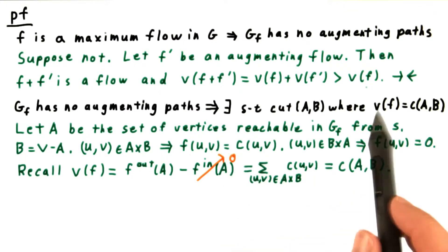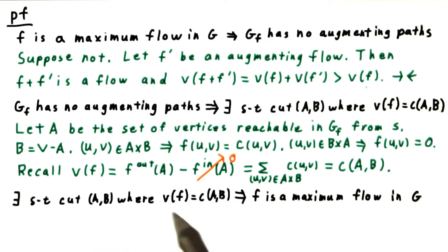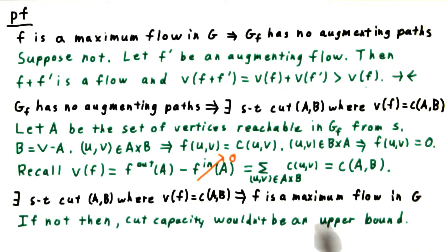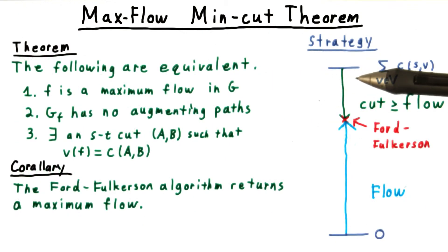That completes the second part of the theorem. Lastly, we need to show that the existence of a cut that has the same value as a flow implies that that flow is a maximum flow. This follows immediately from the fact that a cut is an upper bound — if it's not an upper bound, then cut capacity wouldn't be an upper bound on the value of the flow, so this would produce a contradiction. That then completes the theorem.